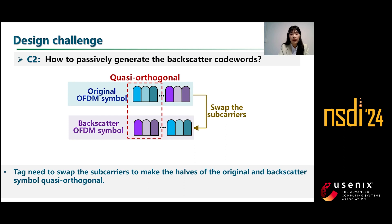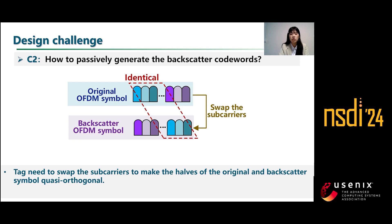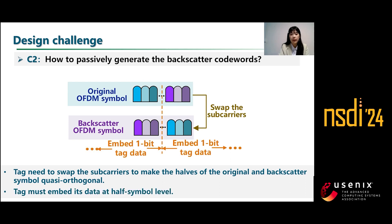The second challenge is how to passively generate the backscatter cohort. Given that the tag cannot vary each bit of the OFDM symbol independently, we ask it to swap the subcarriers of the first half and the second half of the backscatter symbol. This way, the first halves of the original and backscatter symbols would be quasi-orthogonal. However, the first half of the original symbol is still identical to the second half of the backscatter symbol. Therefore, the tag should embed data at the half-symbol level, but typical OFDM backscatter systems can only transmit tag data at single symbol rate at most.